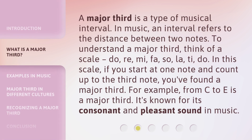A major third is a type of musical interval. In music, an interval refers to the distance between two notes. To understand a major third, think of a scale. In this scale, if you start at one note and count up to the third note, you've found a major third. For example, from C to E is a major third. It's known for its consonant and pleasant sound in music.